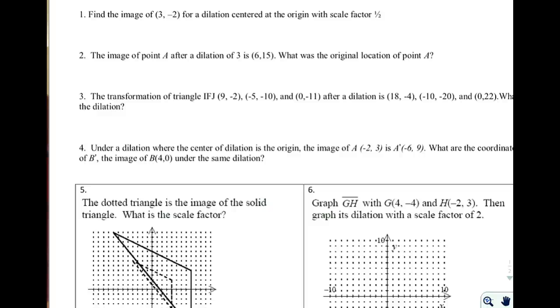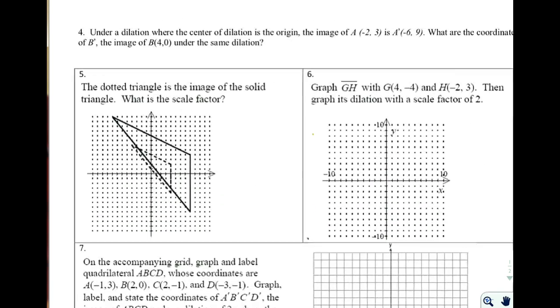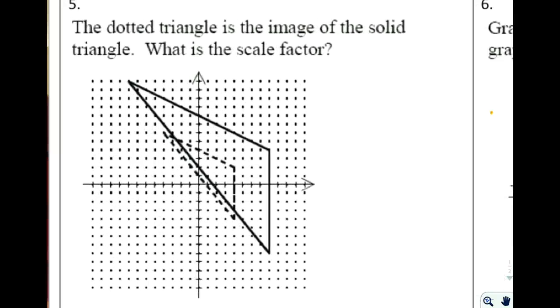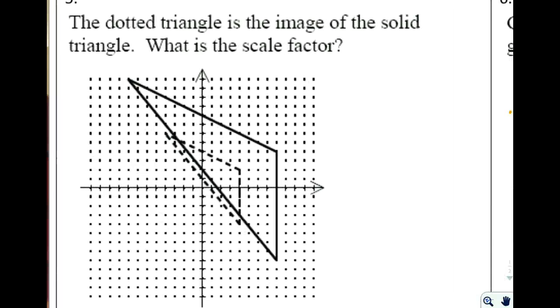Our last technique that we're going to use for transformations is called dilation, and that's where you change the size of a shape when you create this new image. So we're going to start at number five, because I think looking at it graphically helps us better understand the concept. So on number five it says the dotted triangle is the image of the solid triangle. What is the scale factor?